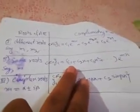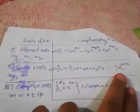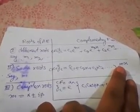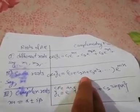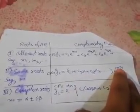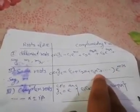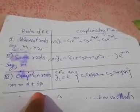If the roots of the auxiliary equation are the same root m, we write the complementary function as (c1 + c2·x + …)·e^(m·x). If the root occurs twice, write (c1 + c2·x)·e^(mx). If the same root occurs three times, add a third term c3·x² and so on.